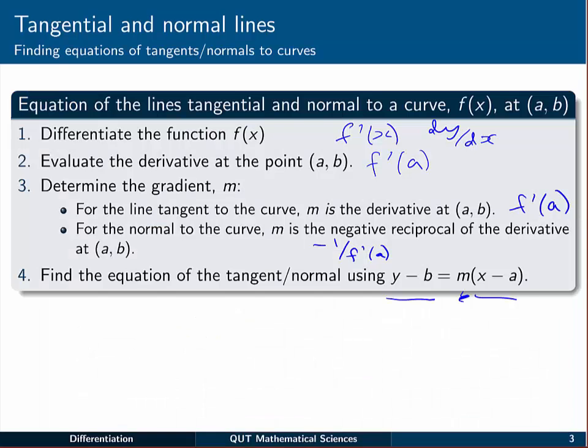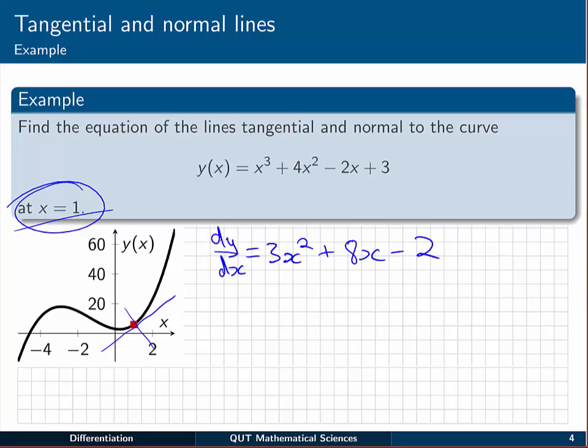The second step says to evaluate that at the point of interest. We're interested at x = 1. So dy/dx at x = 1 is equal to 3 by 1, which is 3 plus 8 by 1 makes 11, take away 2 is 9.